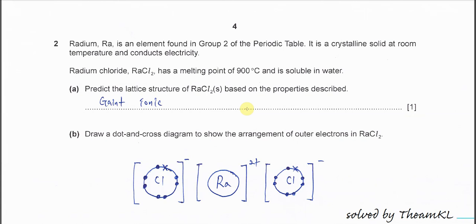Question 2 part A. Radium chloride, RaCl2, has a high melting point of 900 degrees C and is soluble in water.